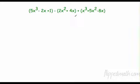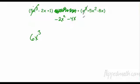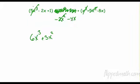Here we have subtraction, so I'm going to make that a negative one and distribute. This becomes negative 2x squared minus 4x. Now all I have to do is combine like terms. The highest exponents are to the third power: I have 5x to the third here and 1x to the third there — five plus one is 6x to the third. Then to the second power: negative 2x squared plus 5x squared — negative two plus five is plus 3x squared. Then degree one: negative 2x minus 4x is negative 6x, minus 8 is negative 14x. Then my constant: only one here, so plus one.